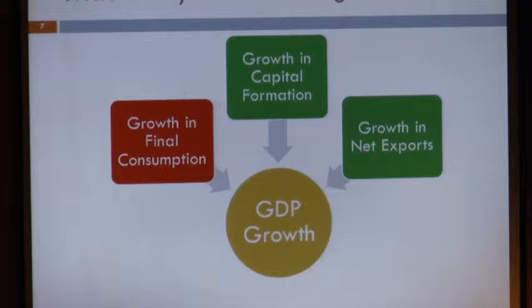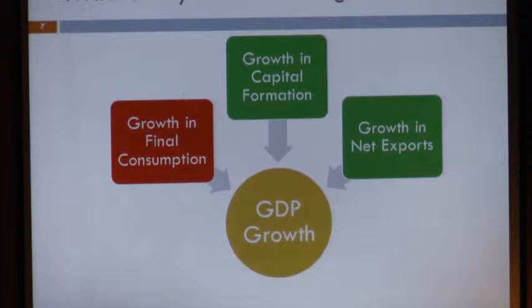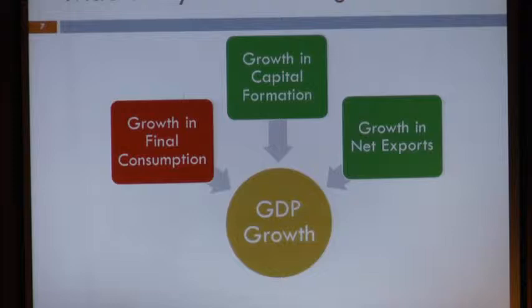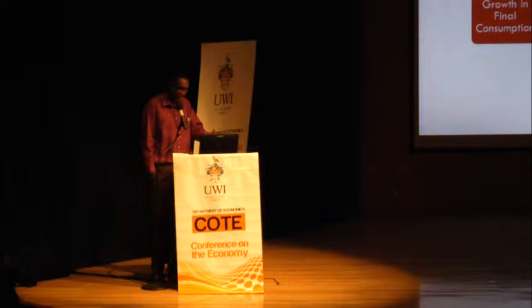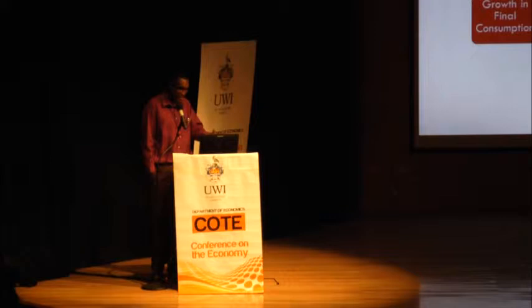On a very simplistic level, growth can be derived from basically three sources: growth in final consumption — including private sector and government consumption — growth in capital formation, and growth in net exports. In small economies, consumption growth can be a bit of a challenge, because the openness of the economy means any growth derived from final consumption is susceptible to a high level of leakages, which curtails the eventual multiplier effect it could have on the economy as a whole.